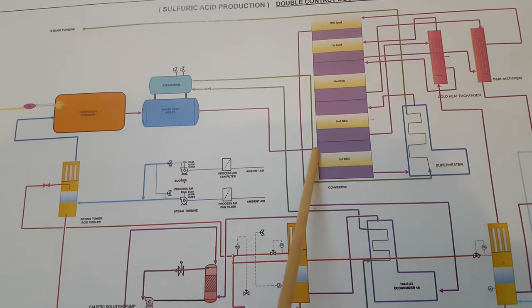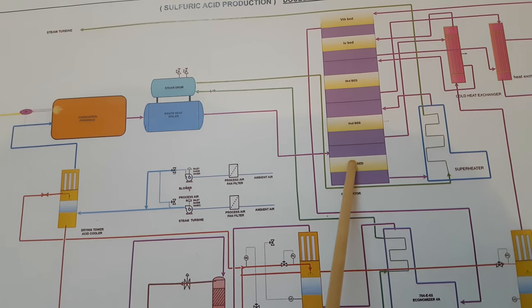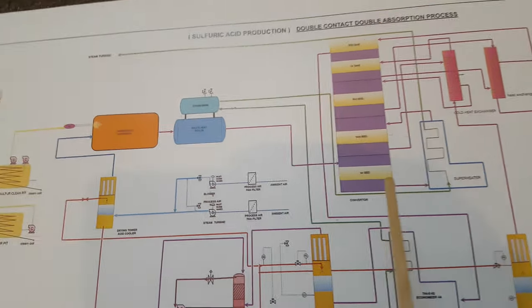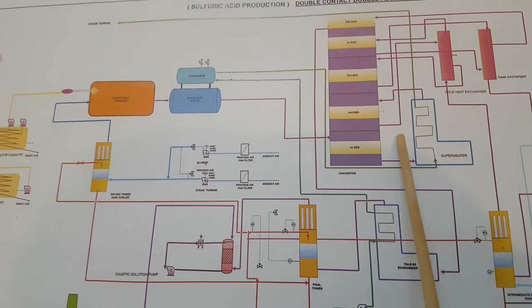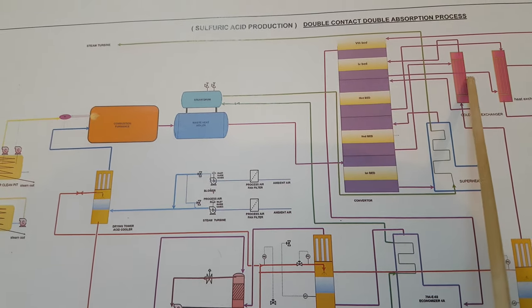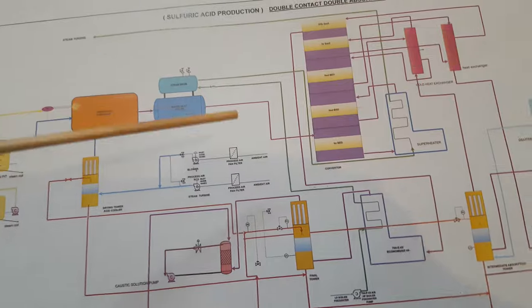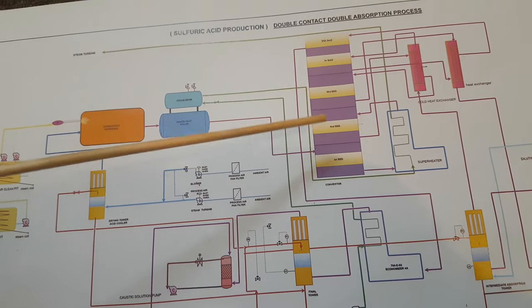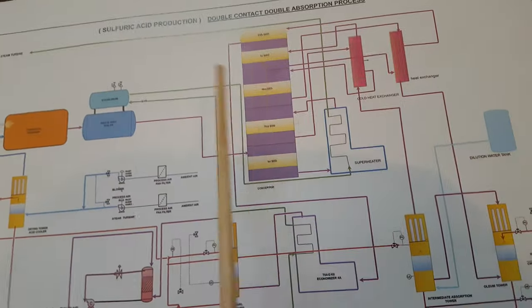From the waste heat boiler, gas goes to the first bed. From the first bed, the gas temperature will be around 420°C. When sulfur dioxide passes through the vanadium pentoxide catalyst bed, heat is released. We have to remove this heat so we can pass the process gas to the other beds. We send this gas to the superheater, then from the superheater gas goes to the second bed. From the second bed, again heat is released, so we send this gas onward. We divide the catalyst into multiple beds so that we can easily remove all the heat and convert all the sulfur dioxide to sulfur trioxide efficiently.